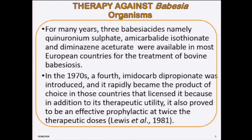We have several therapy techniques against these organisms. Three babesiacides — namely quinuronium sulfate, amicarbalide isethionate, and diminazene aceturate — were available in most European countries for treatment of bovine babesiosis. In the early 70s, a fourth one, imidocarb dipropionate, was introduced. It rapidly became the product of choice because, in addition to its therapeutic utility, it also proved to be an effective prophylactic at twice the therapeutic dose.